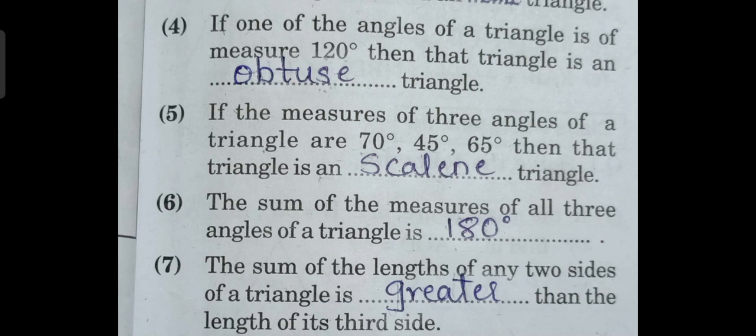Fourth: if one of the angles of a triangle measures 120 degrees, that is greater than 90 degrees, then that triangle is an obtuse triangle. Fifth: if the measures of the three angles of a triangle are 70, 45, and 65 degrees, all different and less than 90 degrees, that is a scalene triangle. Sixth: the sum of the measures of all three angles of a triangle is 180 degrees. Seventh: the sum of the lengths of any two sides of a triangle is greater than the length of its third side.